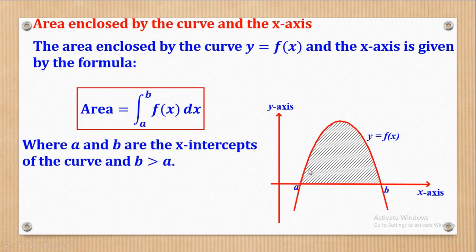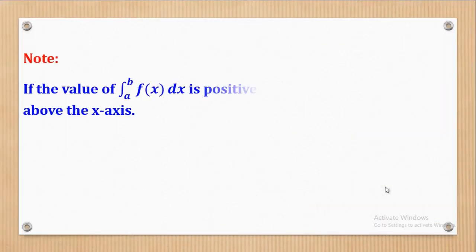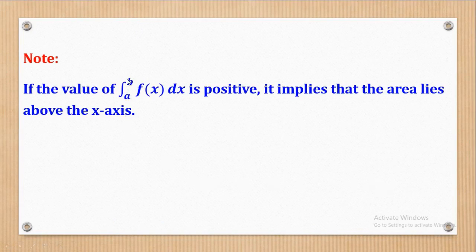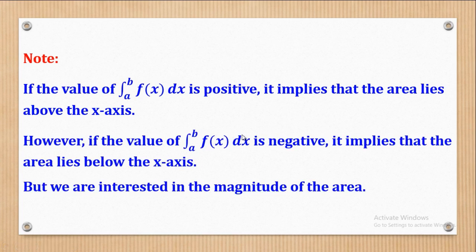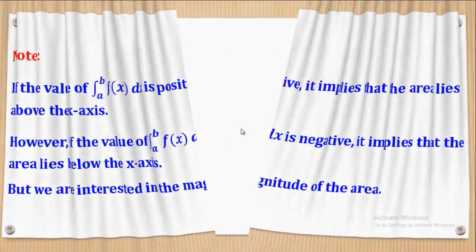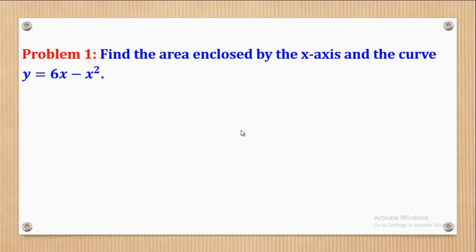Therefore, the area of the curve y = f(x) will be given by the integral of f(x) from a to b with respect to x. There are some points you need to note: if the value of the integral of f(x) from a to b is positive, it implies that the area is above the x-axis. However, if this value is negative, it implies that the area is below the x-axis. But remember, we are interested in the magnitude of the area. With that knowledge, we shall go through the solution to the following problems.